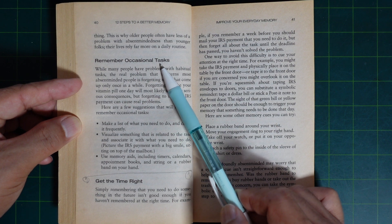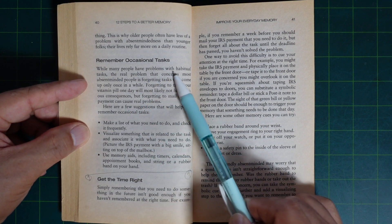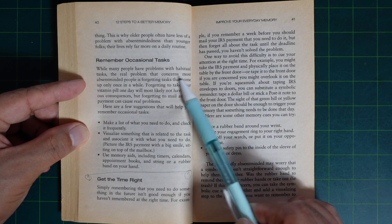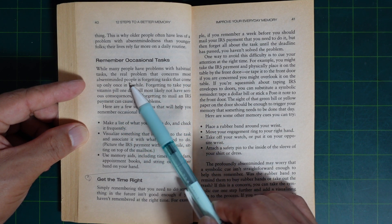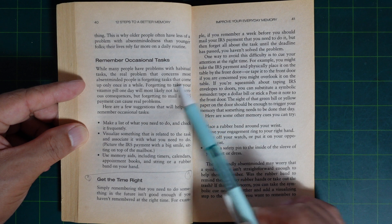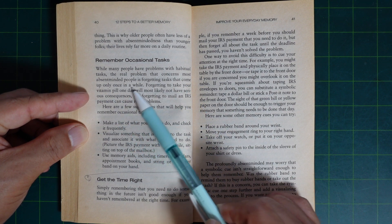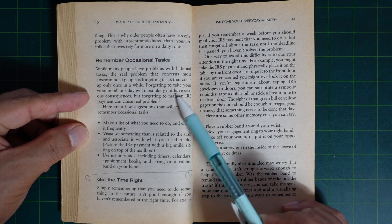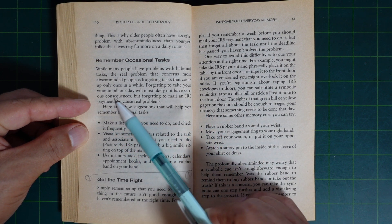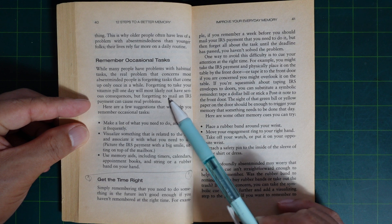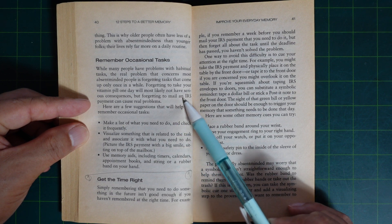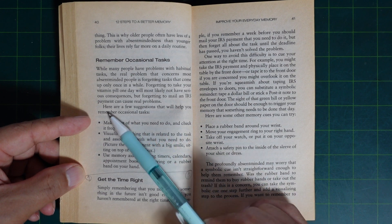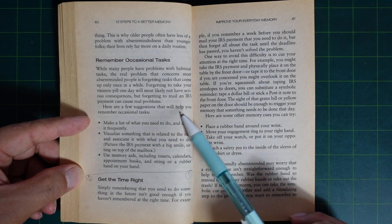Remember occasional tasks. While many people have problems with habitual tasks, the real problem that concerns most absent-minded people is forgetting tasks that come up only once in a while. Forgetting the task of buying something one day will most likely not have serious consequences. But forgetting to make an IRS payment can cause real problems.